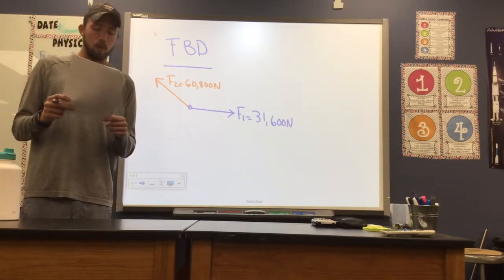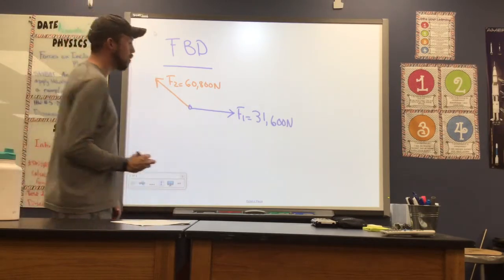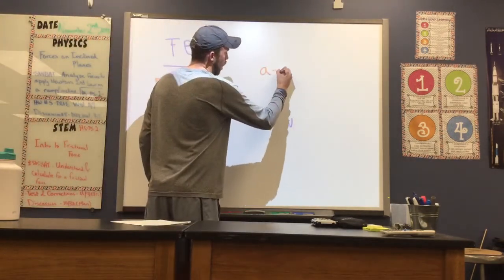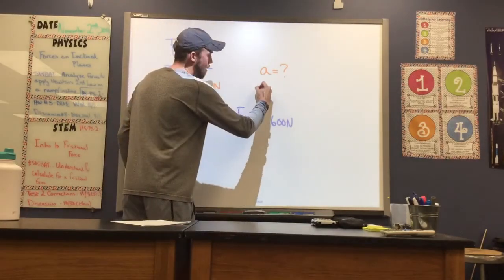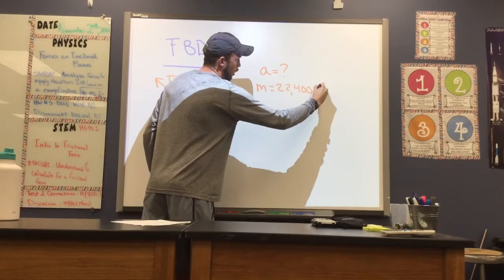Now we're asked here for what is the magnitude of the resultant acceleration of the sailboat. So we want to find overall what is our acceleration. Now we're also given a mass of 22,400 kilograms.